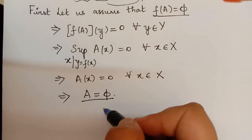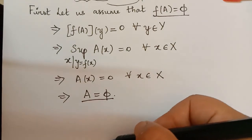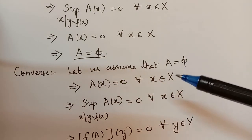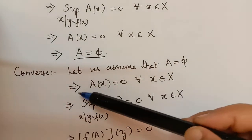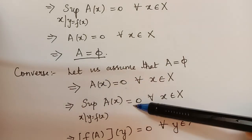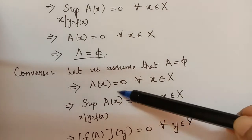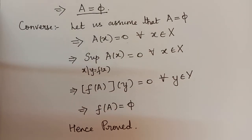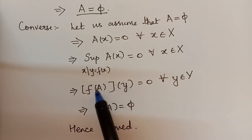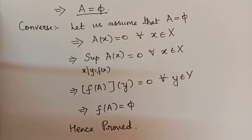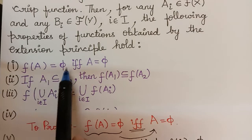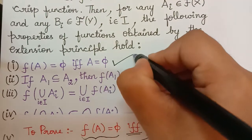In a similar way we can prove the converse. Now let us assume that A = φ and we have to prove that f(A) = φ. If A = φ, we can write the membership grade A(x) = 0 for all x an element of capital X. Taking the supremum, it will also equal 0 for all x. By the extension principle, f(A)(y) = 0 for all y an element of capital Y. Therefore f(A) = φ. So hence we have proved the converse, and the proof of the first property is complete: f(A) = φ if and only if A = φ.